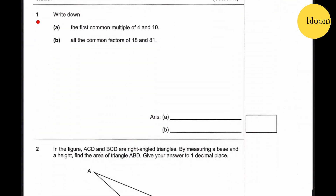Question 1a: Write down the first common multiple of 4 and 10. Multiples of 4: 4, 8, 12, 16, 20. Multiples of 10: 10, 20. The answer is 20.